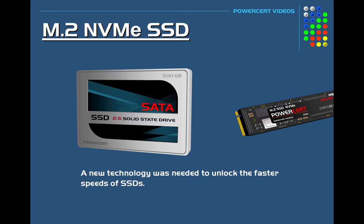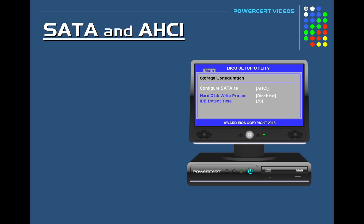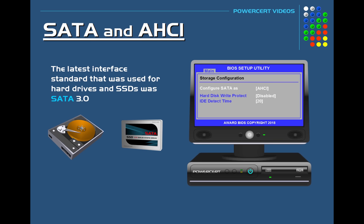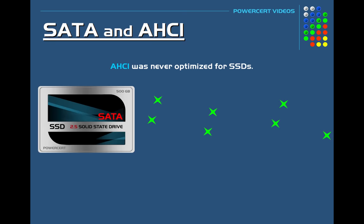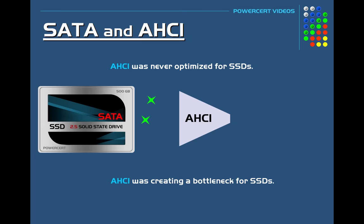That's where M.2 and NVM Express come in. Prior to M.2 and NVM Express, the latest interface standard widely used for hard drives and SSDs was SATA 3.0. The interface standard for software to communicate with SATA was the Advanced Host Controller Interface, or AHCI. AHCI was developed primarily for mechanical hard drives — it wasn't optimized for SSDs, mainly because it dates back to 2004, creating a bottleneck for today's SSDs.